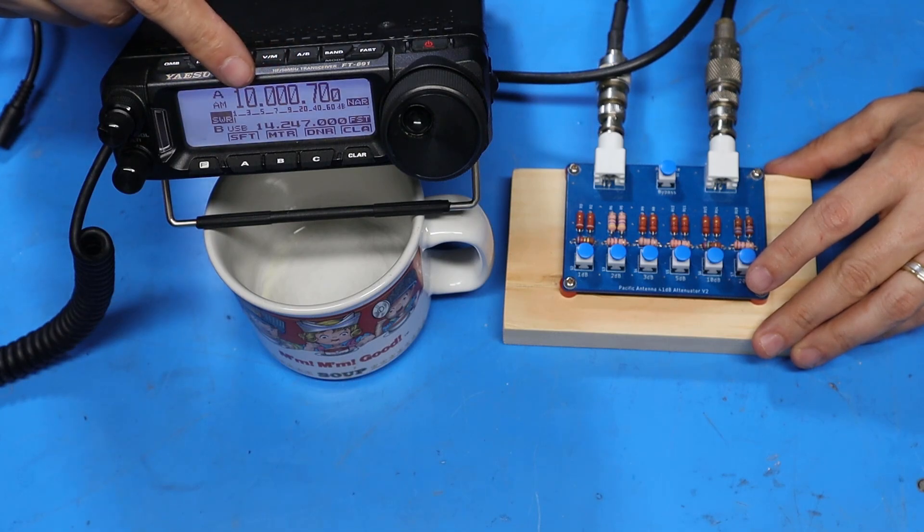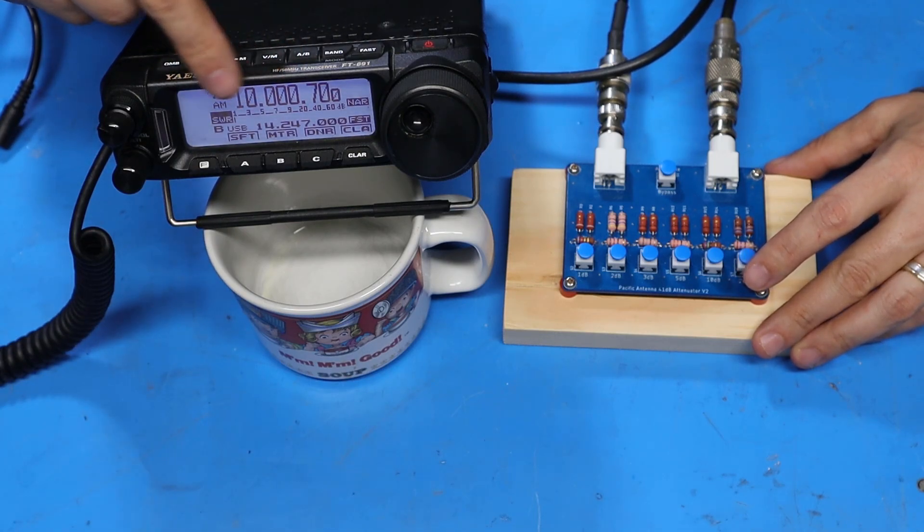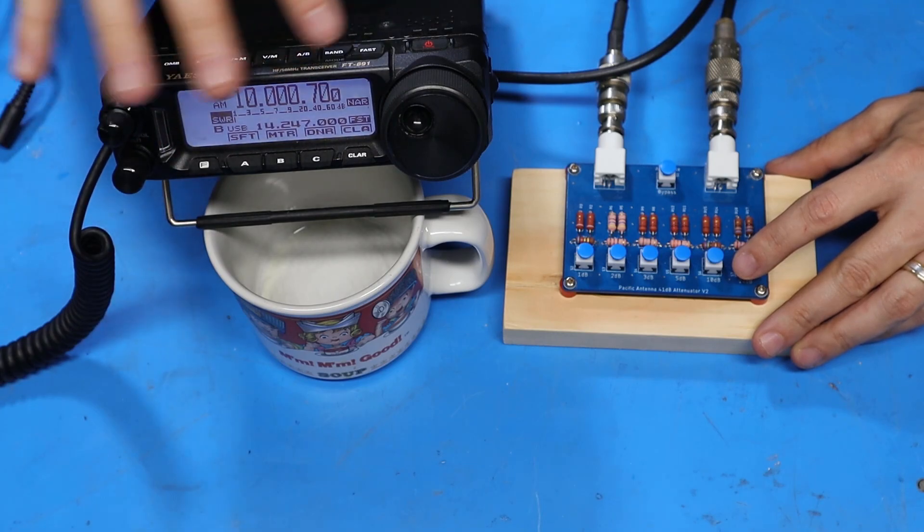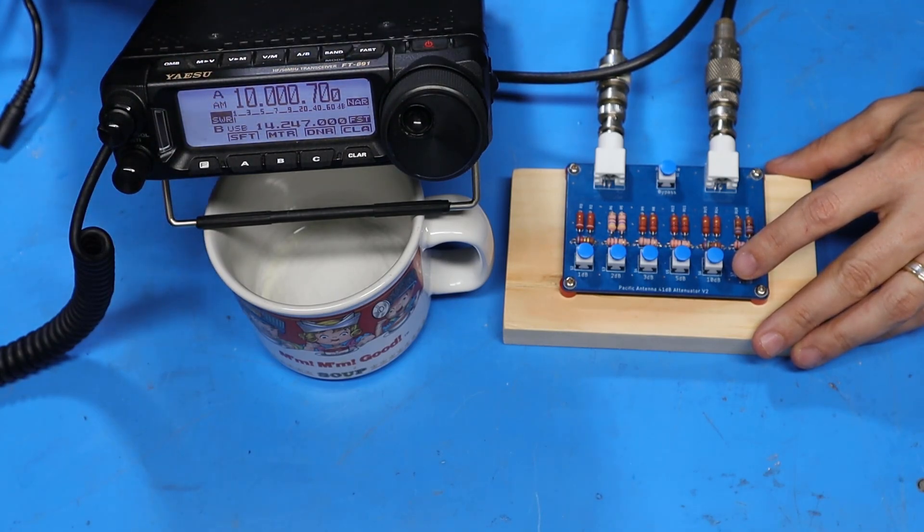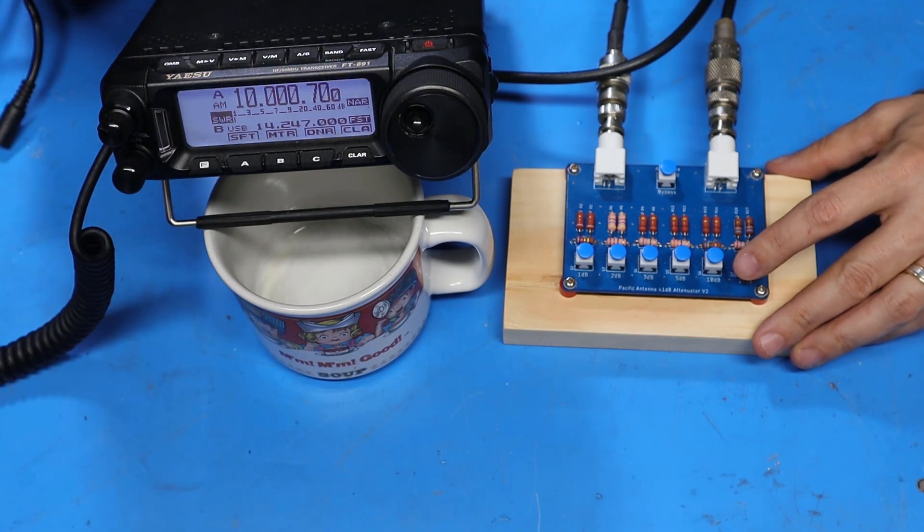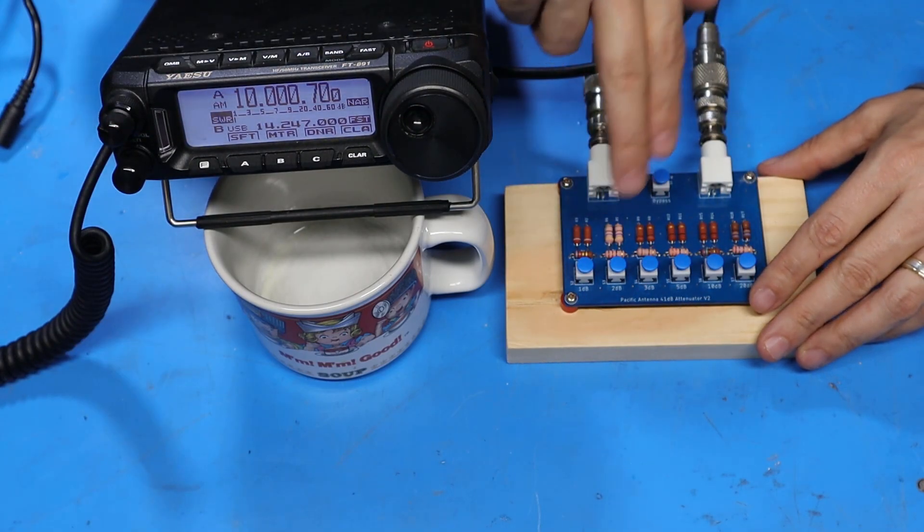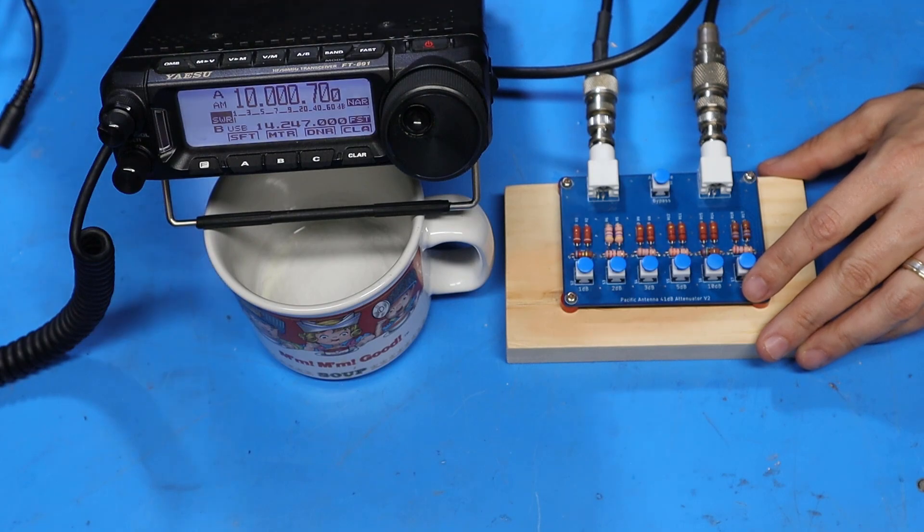As you can see I was able to kind of null out most of WWV. It's very faintly still there on the peaks as the signal fades in and out but for the most part it's gone. So now I'll run back through, turn off the attenuation and we'll see what it sounds like.